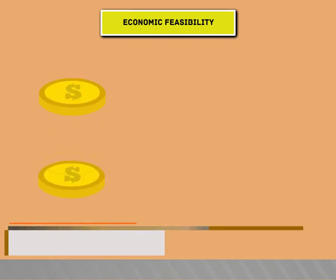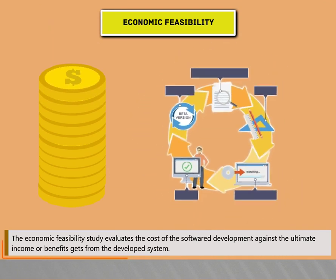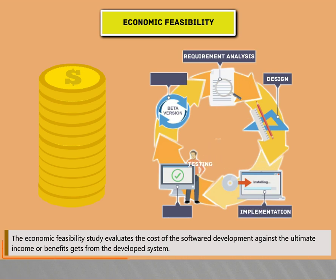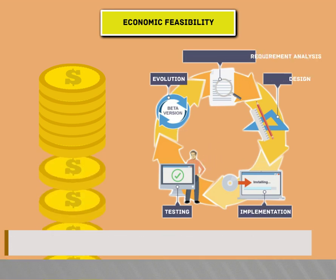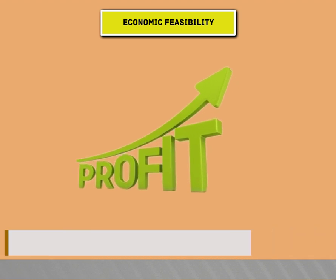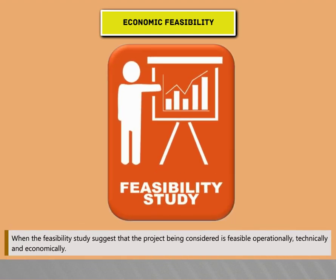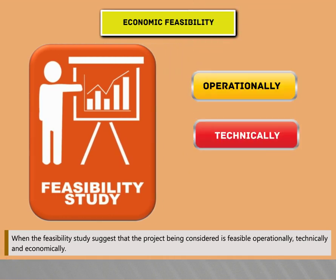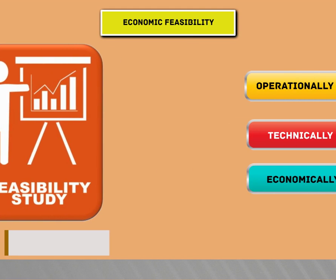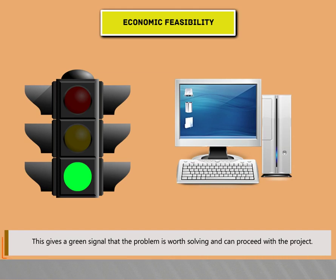The economic feasibility study evaluates the cost of software development against the ultimate income or benefits gained from the developed system. There must be scope for profit after the successful completion of the project. When the feasibility study suggests the project is feasible operationally, technically, and economically, this gives a green signal that the problem is worth solving and the project can proceed.